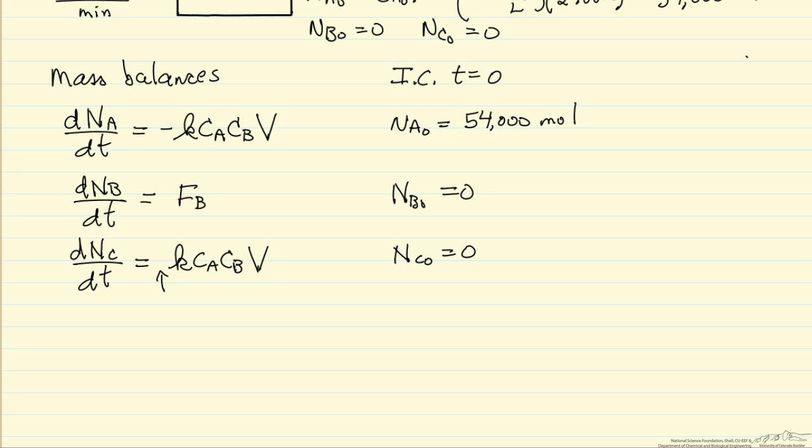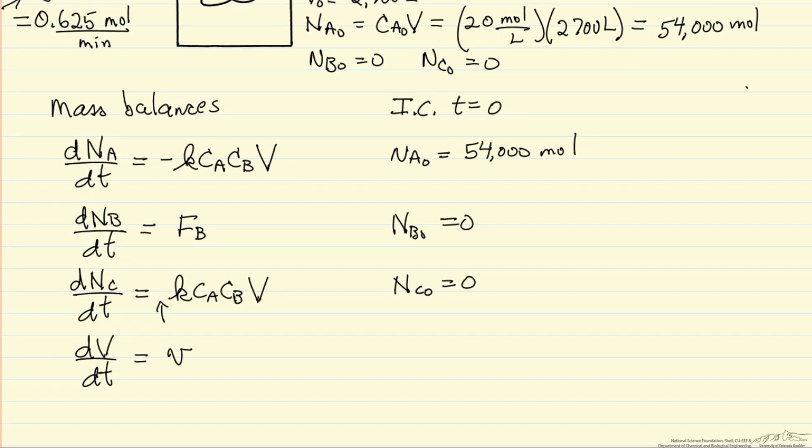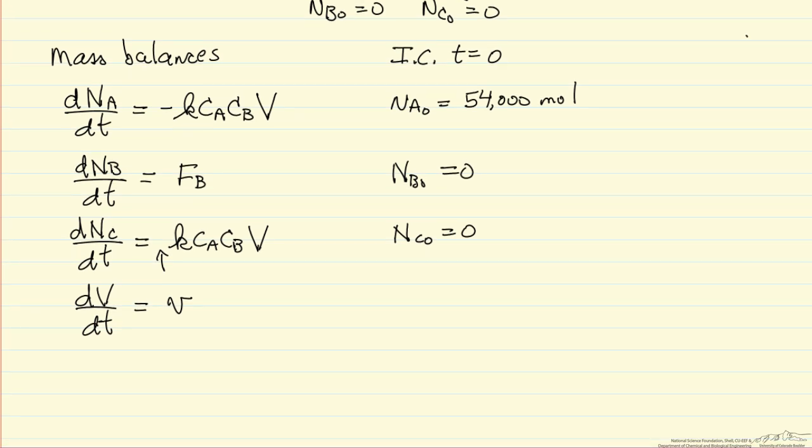We need one more differential equation, and that's for the volume, because the volume is changing because of the volumetric flow rate coming into the reactor. This 12.5 liters per minute flowing into the reactor is a constant, and our initial volume is 2700 liters.